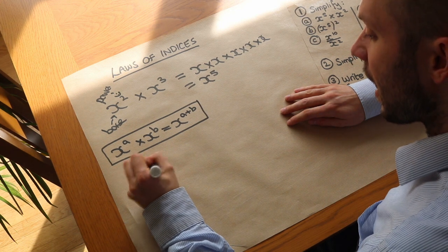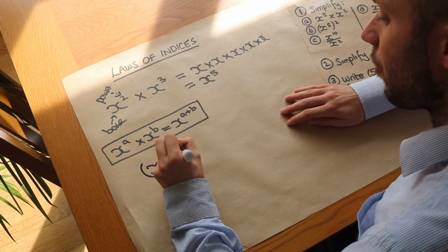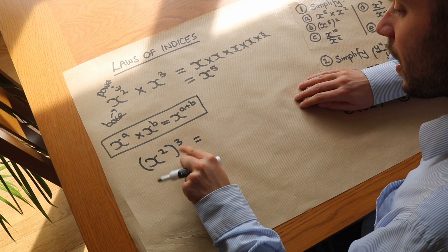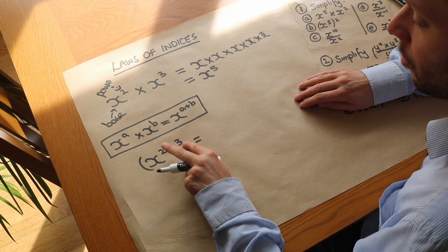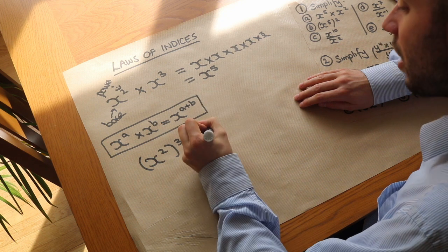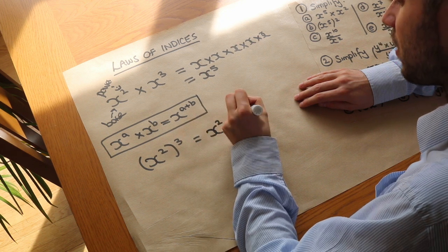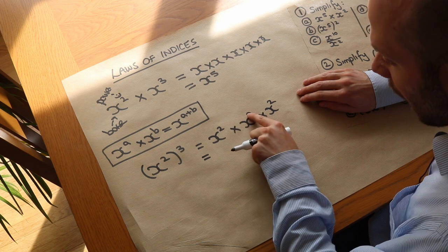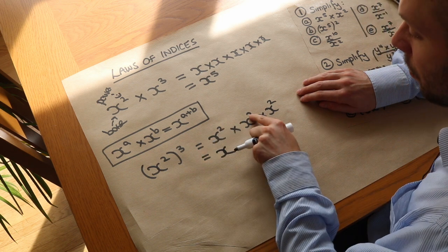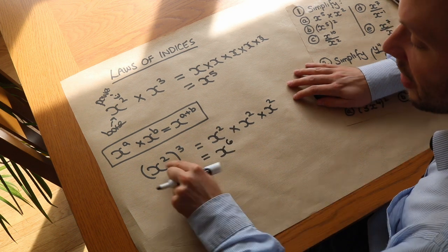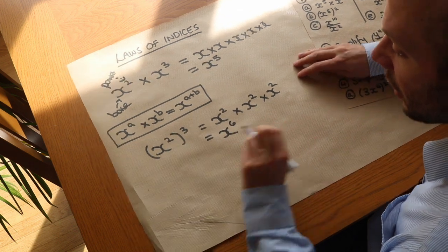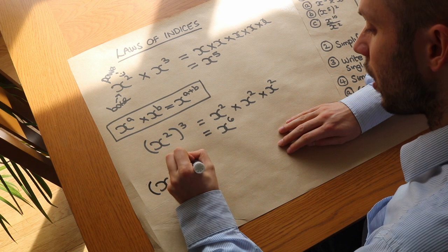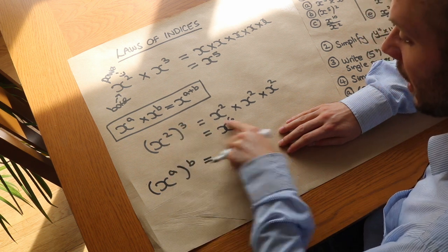Let's consider what happens if we did x squared all to the power of three — a power to a power. x squared cubed means x squared times x squared times x squared. Remember when you cube something it means you multiply it by itself and by itself again. We know from above that we can add the powers, so it'd be x to the power of two plus two plus two, which equals six. And you can see that two times three gives you six. That's our second law of indices: if you raise a power to another power, you multiply those numbers together.